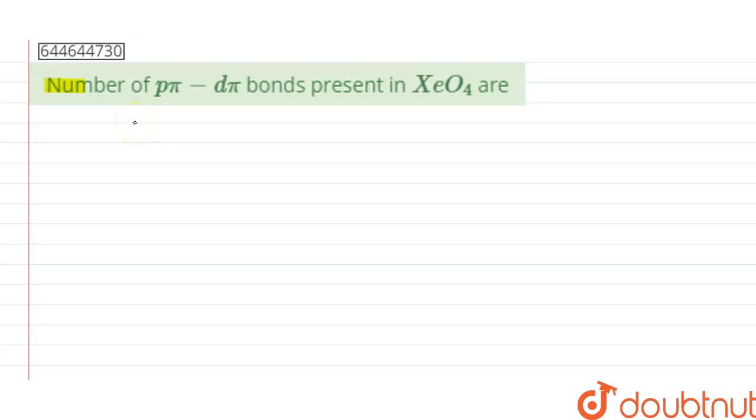Hello guys, the given question asks: number of p pi-d pi bonds present in XeO4 are.